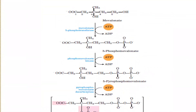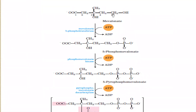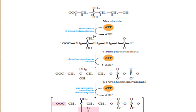Looking at the reactions in detail: this is the mevalonate. From one ATP, one phosphate is transferred onto mevalonate at the fifth carbon, forming 5-phosphomevalonate. The enzyme involved is mevalonate 5-phosphotransferase. This is simply the transfer of a phospho group from ATP to mevalonate.